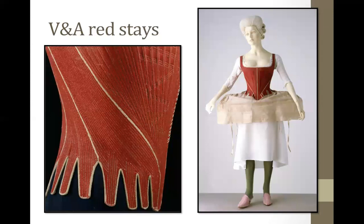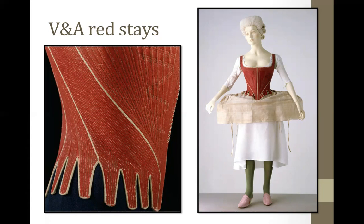Stays were often heavily boned — there really isn't much area that didn't have some sort of whalebone baleen or reed for structure. This boning helped create the conical-shaped torso. This particularly lovely pair is at the Victoria and Albert Museum in London. Some were back-lacing, some were front-lacing, and some were both. The front-lacing stays are much easier to get in and out of — though those red beauties actually have false lacing on the front.